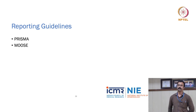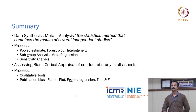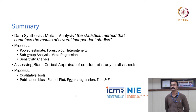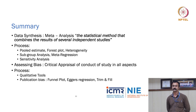Finally, reporting guidelines are available — PRISMA and MOOSE guidelines for reporting systematic review and meta-analysis results. To summarize: data synthesis, technically termed meta-analysis, is the statistical method that combines results of several independent studies to come up with pooled estimates. The complete package includes forest plot, heterogeneity, subgroup analysis, meta-regression, and sensitivity analysis. For assessing bias, it is a critical appraisal of the conduct of study in all aspects, using qualitative tools, and statistical tools such as funnel plot, Egger's regression, and trim and fill. Thank you.